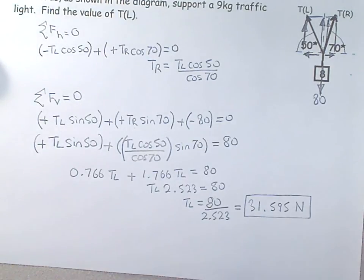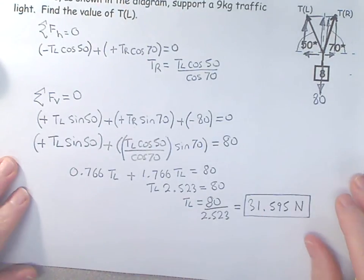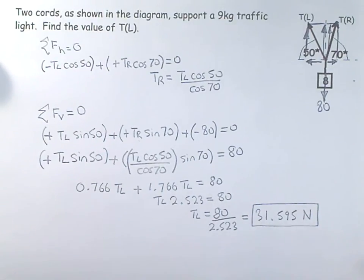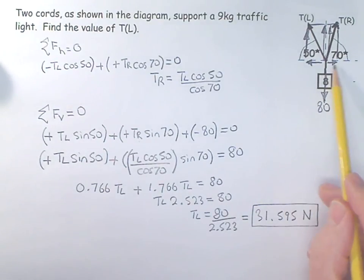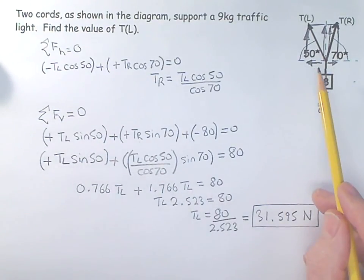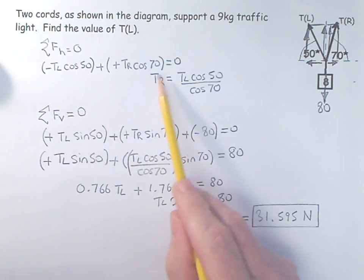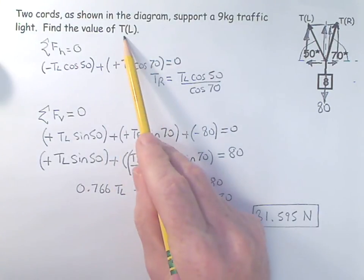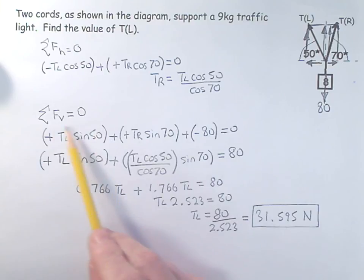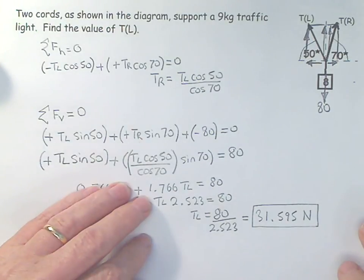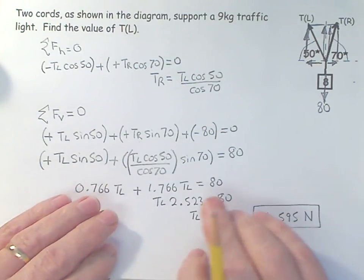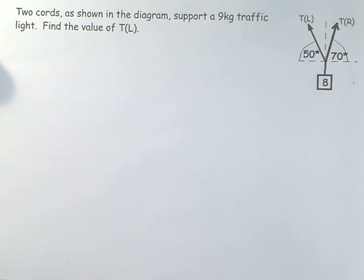So that's the classic way of doing this. You start off and you have. You start off and you have resolve your forces horizontally. And you get a term. Isolate the thing you don't want. I want TL so isolate TR. Resolve your forces vertically. Substitute in. Solve for TL. And we get 31.595. There's another way. And let's look at this.